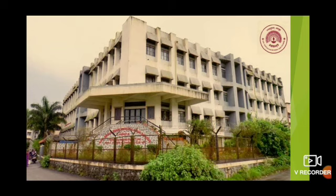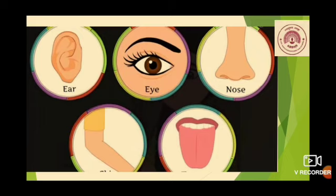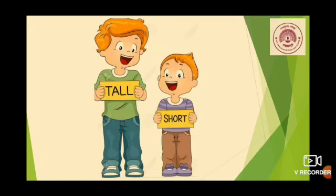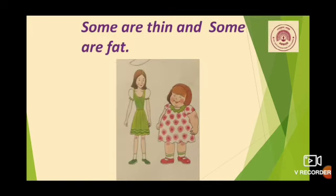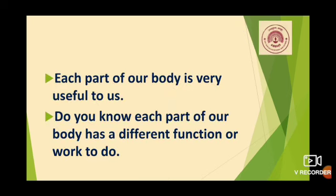We have learned about different parts of our body and their names. So children, can you tell what are the different names of our body parts? Yes, very good. The different names of our body parts are ears, eyes, nose, hand, tongue, etc. We have also studied that each one has the same body parts, but each one looks different. Some are tall and some are short. Some are thin and some are fat. We all have the same body parts, but they have their different names.